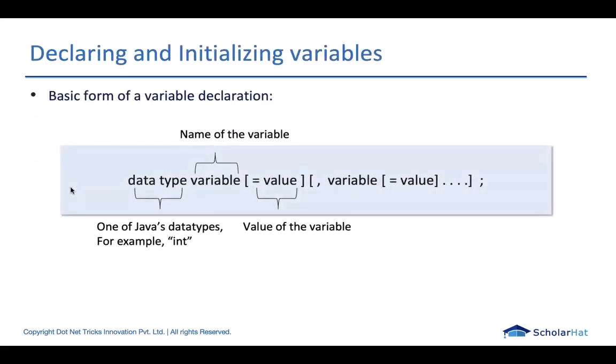There is a specific syntax for how we declare or initialize a variable. Whenever we give a name to a particular variable, we define the type of that variable and then we assign a value into it. If we have multiple variables of similar data type, we can separate them with the help of comma.